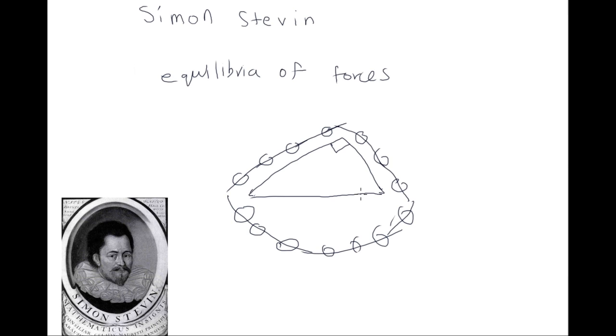Stevin also made contributions to trigonometry. This proof where the wreath is placed on this triangle is known as the epitaph of Stevinus. Although Stevinus's conclusion is correct, his proof had certain logical defects as pointed out by Dijksterhuis. With theory so groundbreaking and an attitude so bold, it is not a surprise that Stevin was considered as a renowned scientific figure of his day.